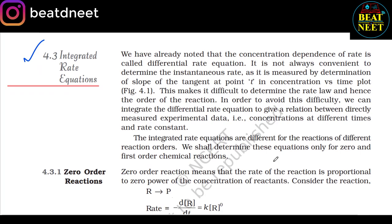We have already noted that concentration dependence of rate is called the differential rate equation. It is not always convenient to determine the instantaneous rate, as it is measured by the slope of a tangent at point t in a concentration-versus-time plot. This makes it difficult to determine the rate law and hence the order of reaction. To avoid this difficulty, we can integrate the differential rate equation to give a relation between directly measured experimental data (concentration at different times) and the rate constant. The integrated rate equations are different for reactions of different orders. We shall determine these equations only for zero and first order reactions.